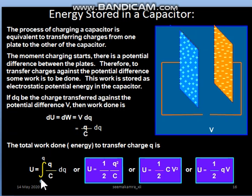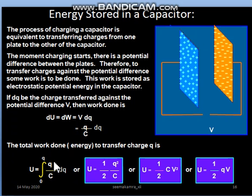We are transferring a total charge Q to the capacitor. Taking 1/C outside the integral, we integrate q·dq, whose result is q²/2. After applying the limits, the answer becomes q²/2C. So the energy stored in the capacitor is U = q²/2C.